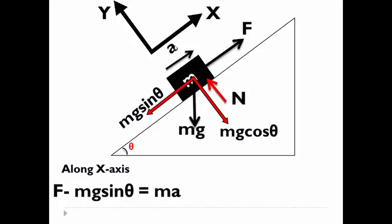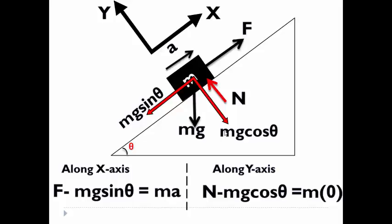There is no acceleration along y axis. Hence along y axis, N minus Mg cos theta will be equal to 0.